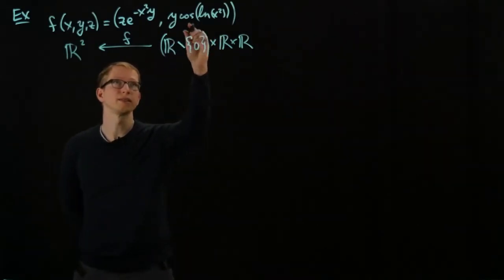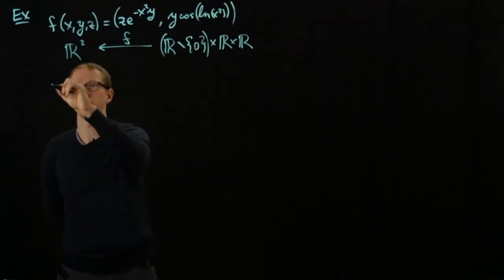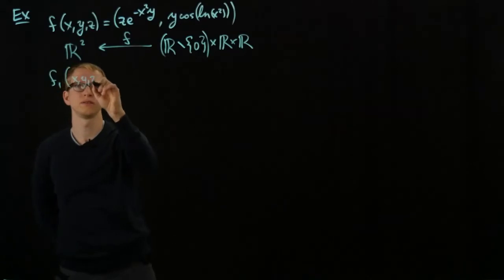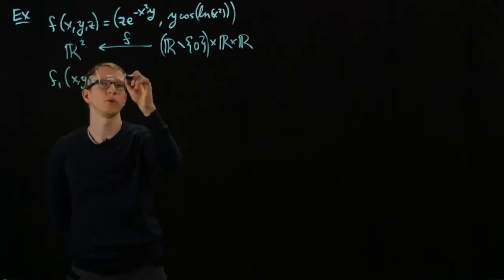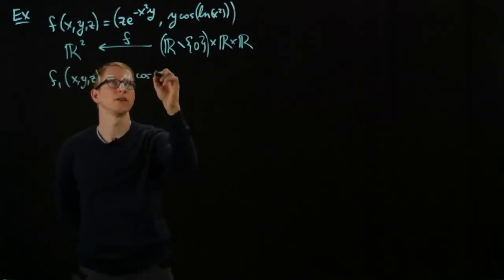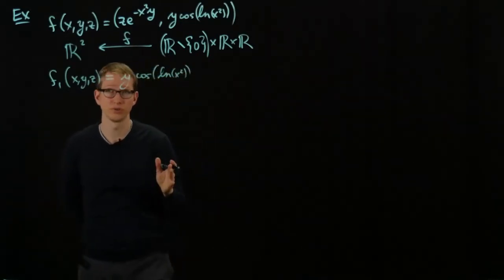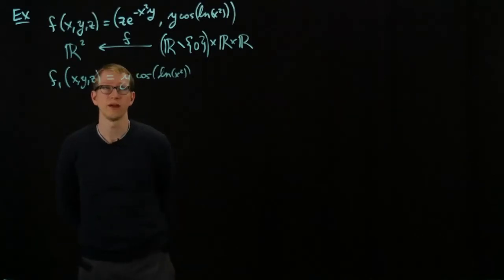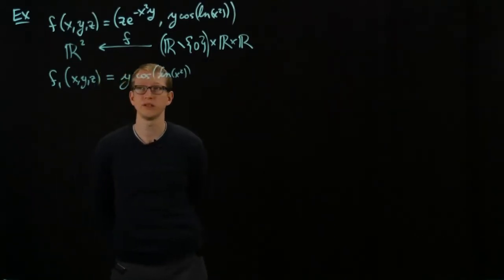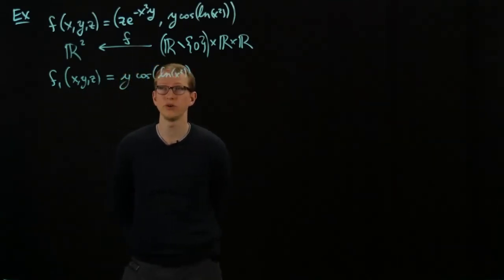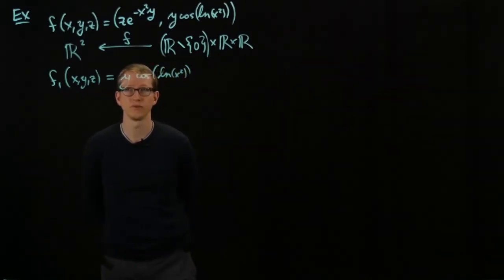Let's look at the right-hand side. We'll denote F1 to be the function that takes x, y, z and gives y·cosine(ln(x²)). We could take the partial derivatives and calculate what that part of the Jacobian is, but for this particular example, let's focus on calculating the differential using the theorems we know and the usual derivatives from real analysis of a single variable.